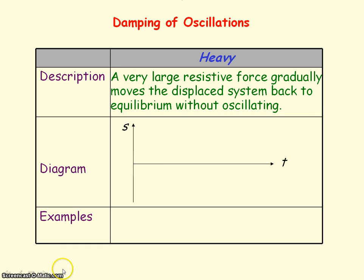Heavy damping involves a very large resistive force acting on an object that has been displaced from its equilibrium position. This large force returns the displaced system back to its equilibrium position without any oscillation, so the displacement-time graph looks like this.